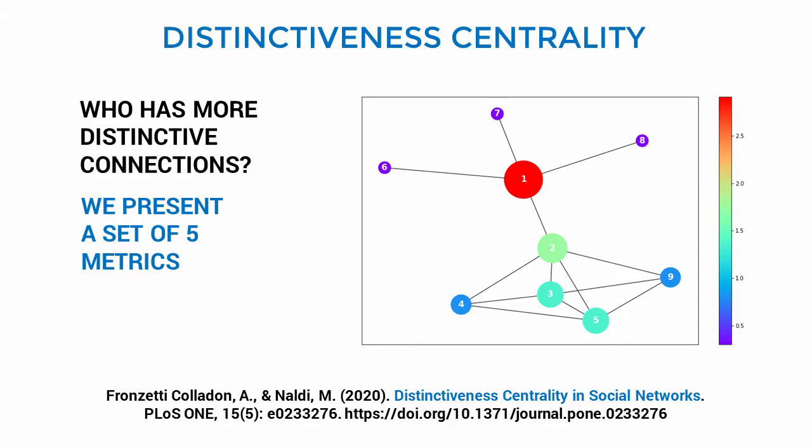On the other hand, if we take distinctiveness centrality, we see that node 1 is regarded as more important because it can reach nodes 6, 7 and 8, which otherwise would be disconnected from the main network component.